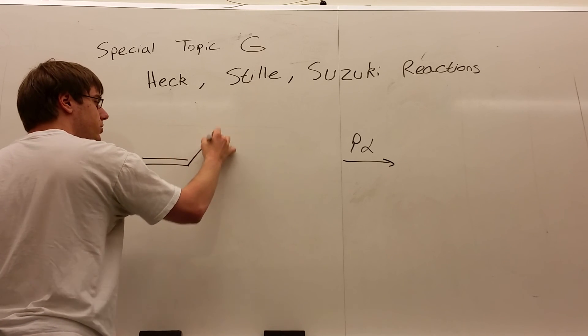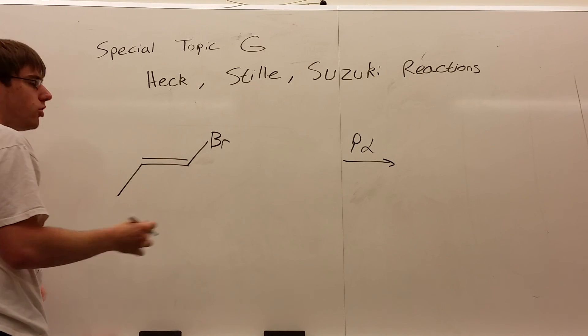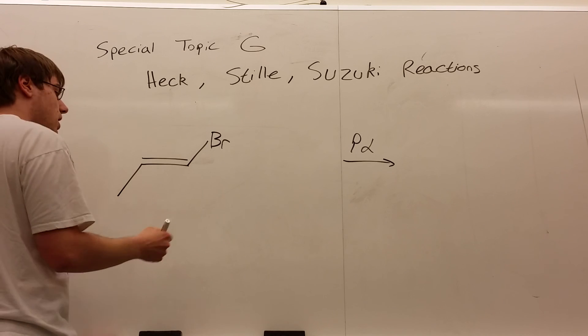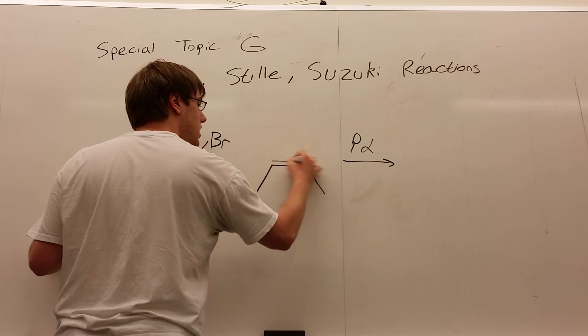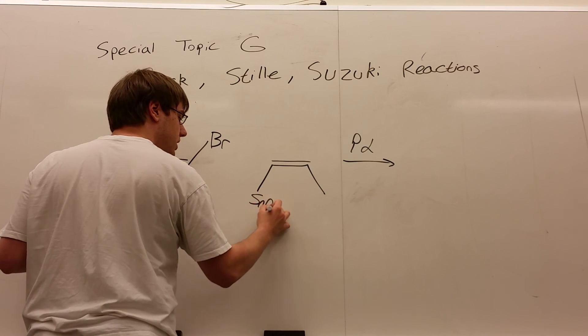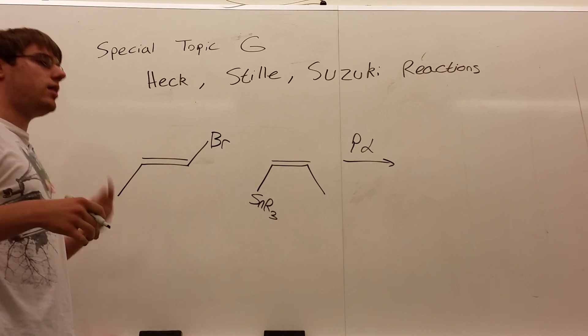On one double bond, you will still have a halogen, a good leaving group, bromine, iodine. And on the other double bond, you will have SnR3. Sn, I believe, is tin.